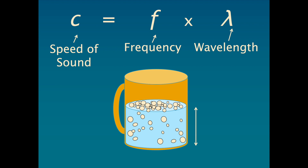If the column of liquid doesn't change, neither does the wavelength. However, the speed of sound does change. Therefore, it is the frequency that must change in order to balance the equation, which we observe as a rise in the pitch of sound.